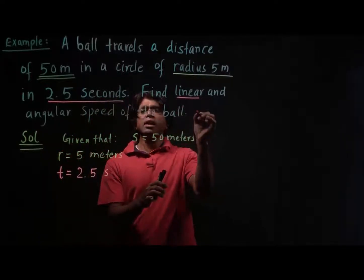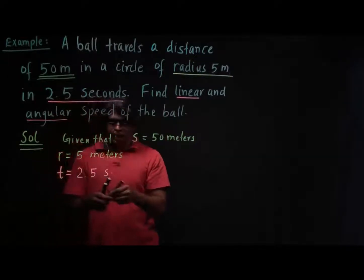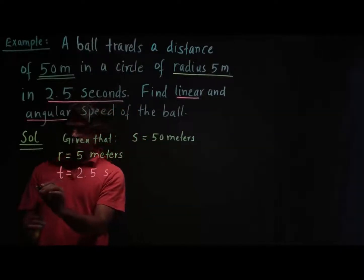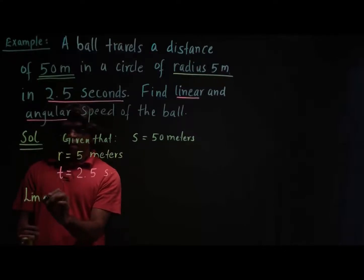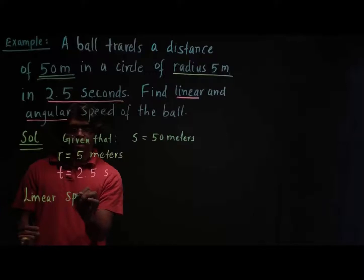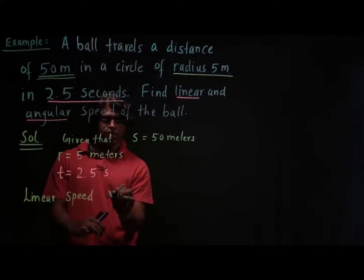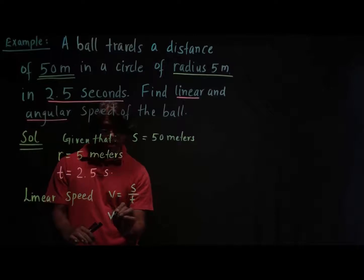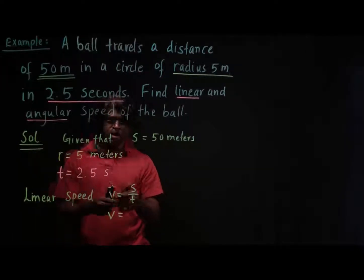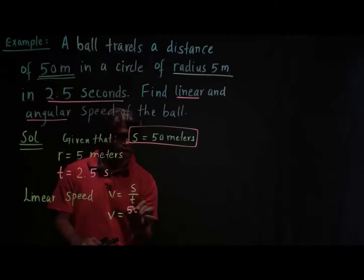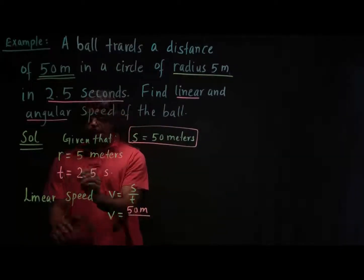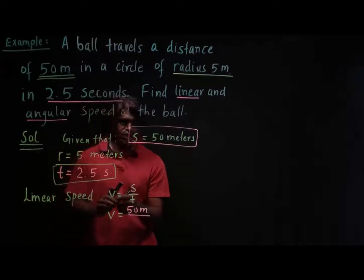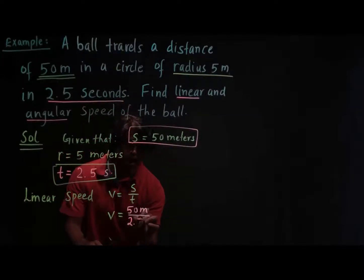Now we need to find the linear and angular speed. Let's first find the linear speed because the distance and time are both given. The formula for linear speed is: speed v is equal to distance s over time t. So I'm going to write 50 meters over 2.5 seconds.